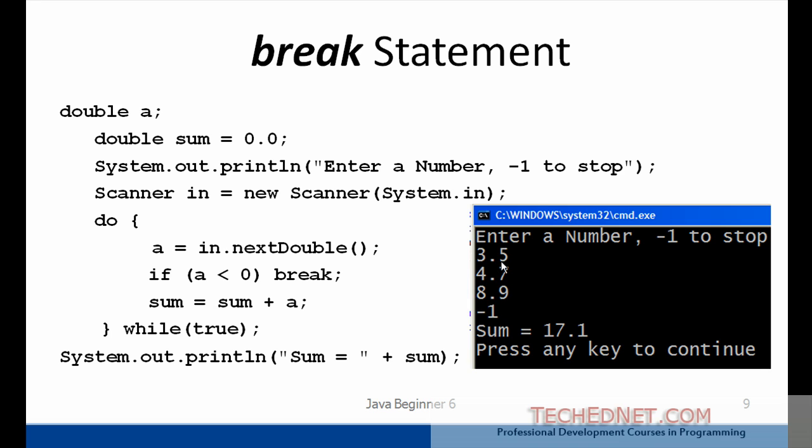So in this example as shown here, I entered three numbers 3.5, 4.7, 8.9 and when I entered minus 1, it terminated the loop. It gave me the sum of the numbers I had entered before entering minus 1.